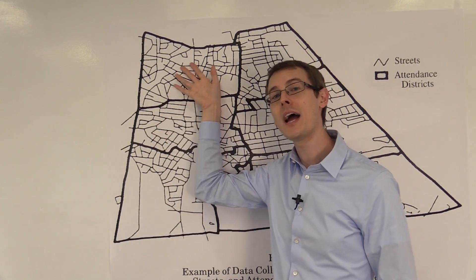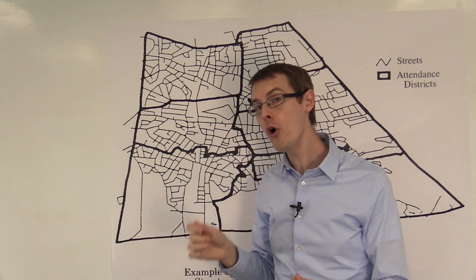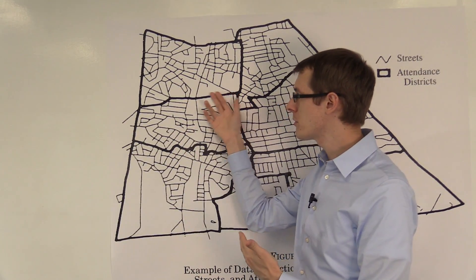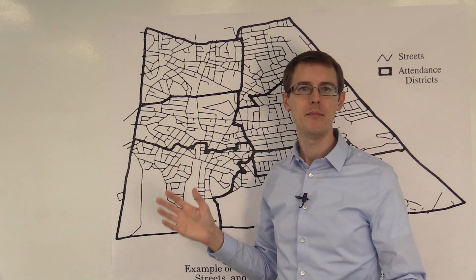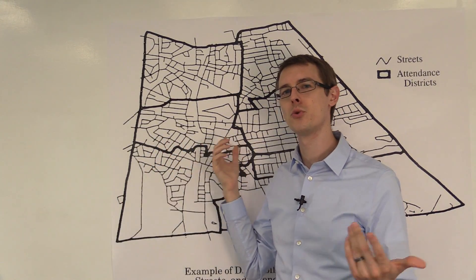And so actually that would be a confounding variable. That even though we're looking very close to the border, the border was drawn that way for a reason maybe. Maybe it's some kind of gerrymandering for school districts.